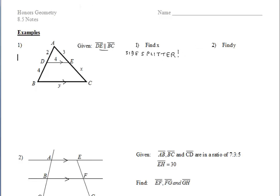So we can see that the ratio of AD to DB is equal to the ratio of AE to EC, which means that 2 to 4 is equal to 3 to X. In order to solve that proportion, we'll cross-multiply, and we end up getting X is 6.